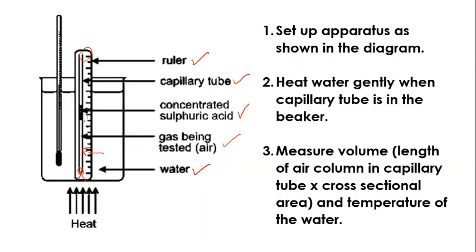We're watching how this column changes. That's how that works. And then of course, this is our thermometer. This is not labeled here, but it really should be. So make sure you label that. So you get two points for this diagram. If you want to draw a little flame, little Bunsen burner at the bottom here, you can do that as well. Or you can just label some arrows and say that's where the heat is coming from. Then we have our simple explanation. We'd set up the apparatus as shown in our diagram. Then we would heat the water gently when the capillary tube is in the beaker. And finally, we would measure volume of the air column by measuring the length of the air and multiplying it by the cross sectional area. And the temperature of the water.